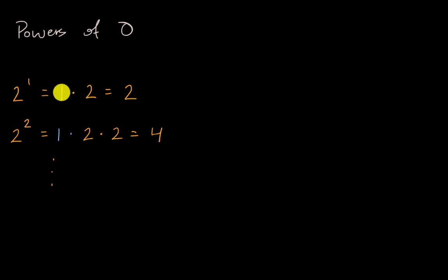Now, the reason why I have this one here is to justify why two to the zero power should be equal to one. If we use the same exact idea, you start with a one and then multiply it by two zero times. Well, that's just going to end up with a one.